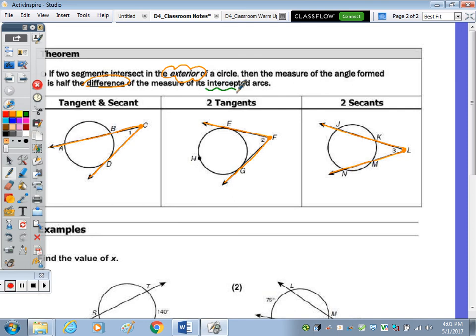Well, the intercepted arcs are the arcs that are within those two segments. So that would be AD and BD. So the measure of angle 1, and I'll call this X and Y, is half of X minus Y. Here, the arc would be E, H, G, and then E, G.